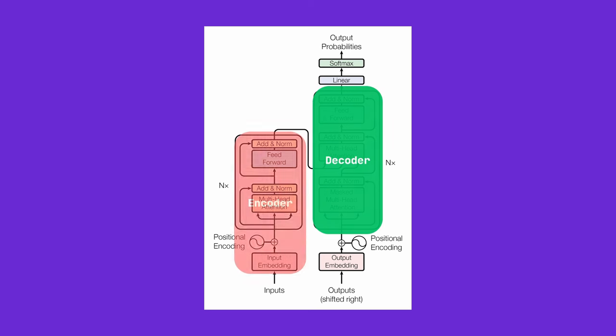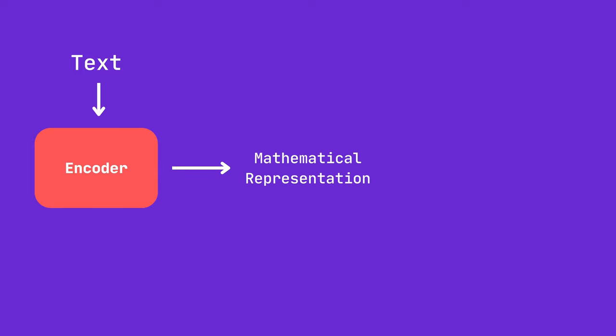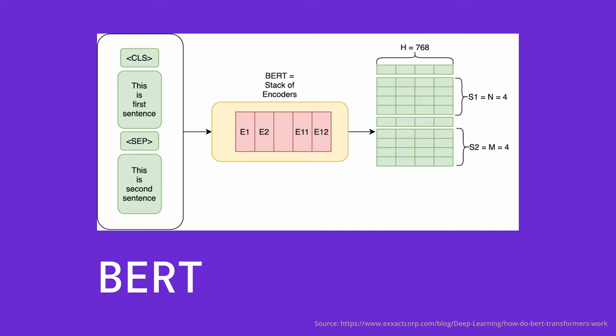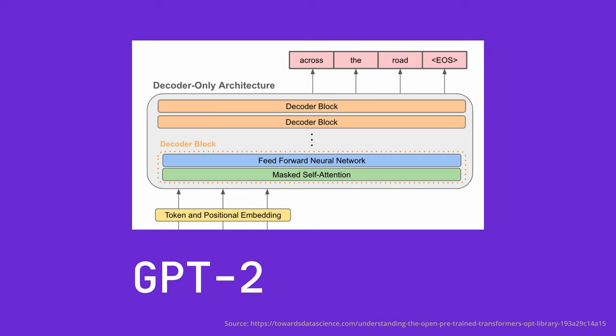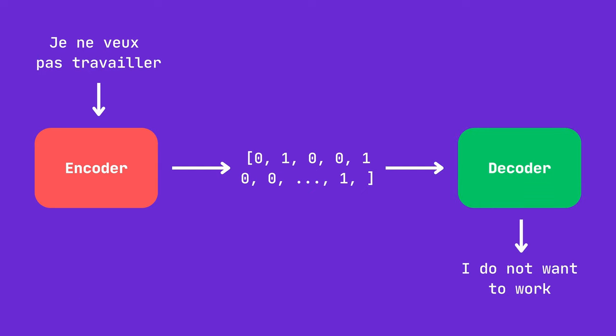Transformer-based language models employ an encoder-decoder architecture to process and generate text. The encoder takes in text and encodes it into a numerical, high-dimensional, geometrically and statistically meaningful representation. The decoder takes in such a representation and decodes it back into text. Depending on the task, a language model might use only the encoder, the decoder, or both. For example, the BERT model uses only the encoder and is best at prediction or classification tasks. The GPT model is decoder-only and best suited for generating novel text. For machine translation, both encoder and decoder are typically used.